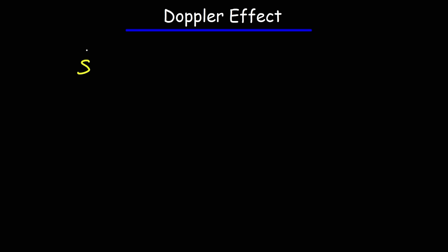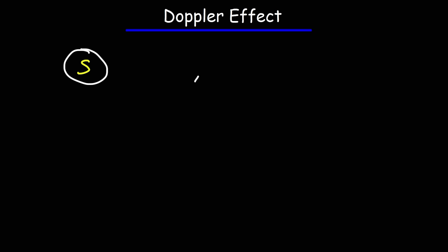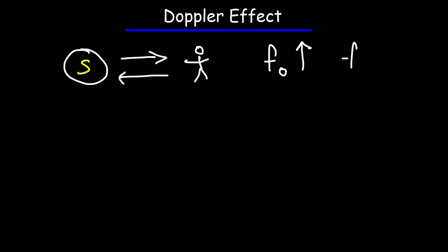Let's say we have a source, and this source emits sound waves in all directions. Now let's say we have an observer. If the source moves towards the observer, or if the observer moves towards the source of the sound waves, the frequency detected by the observer — that's FO — is going to increase.